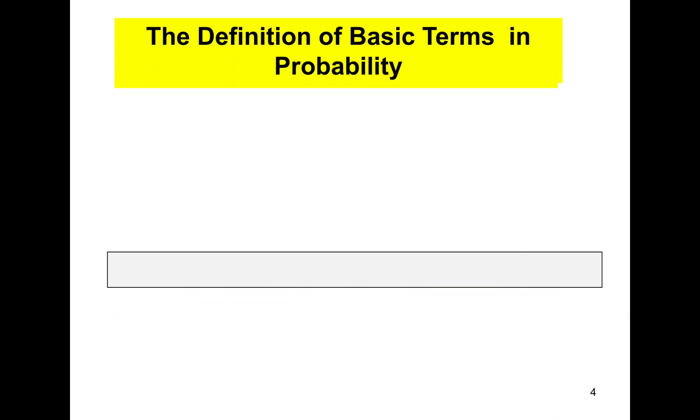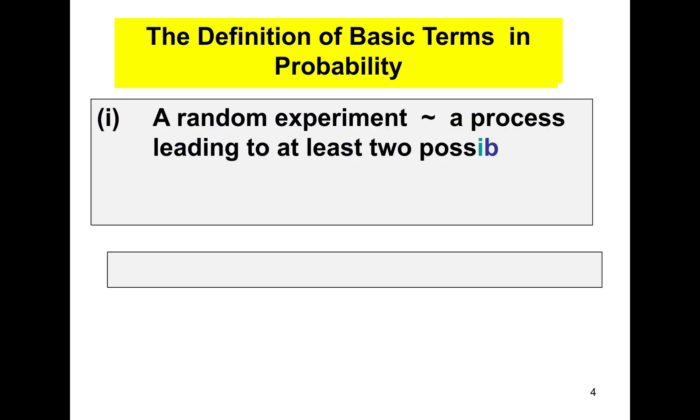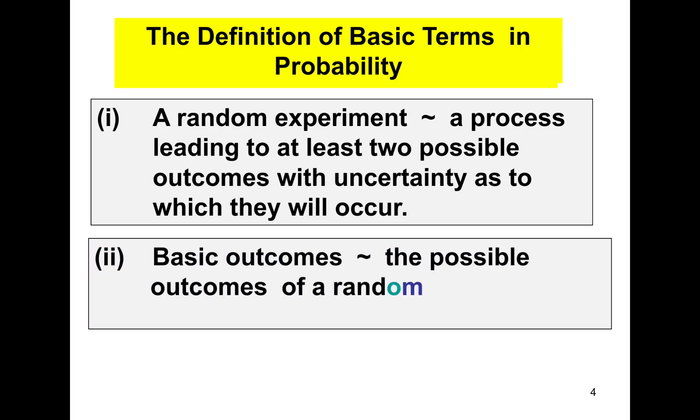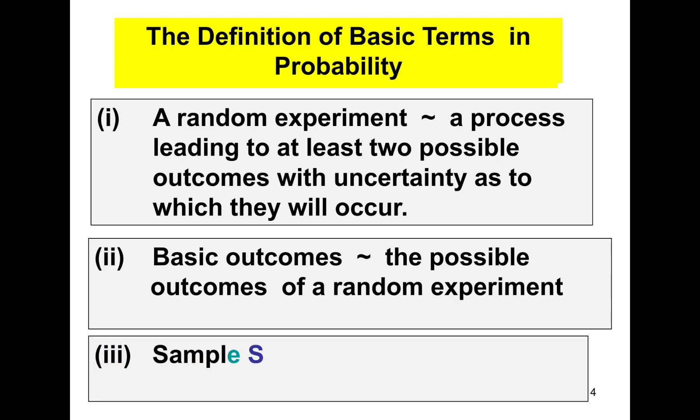The definition of basic terms in probability. The first one is a random experiment. A random experiment is a process leading to at least 2 possible outcomes with uncertainty as to which will occur. Number 2, basic outcomes. Basic outcomes are the possible outcomes of a random experiment. And number 3, sample space. The set of all basic outcomes, denoted by capital S.